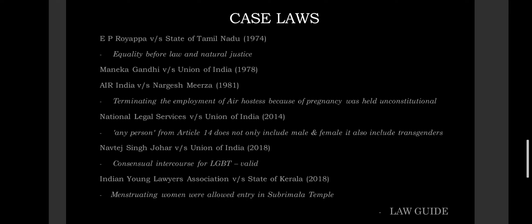Third is Air India vs. Nargesh Mirza — where the termination of air hostess employment was challenged as gender or sex discrimination, and was held unconstitutional. Fourth is National Legal Services Authority vs. Union of India — which held that 'any person' in Article 14 includes not only male and female but also transgender people. Fifth is Navtej Singh Johar vs. Union of India — where consensual intercourse among LGBT individuals was held valid and IPC Section 377 was struck down as being against the right to equality of LGBTQ people.